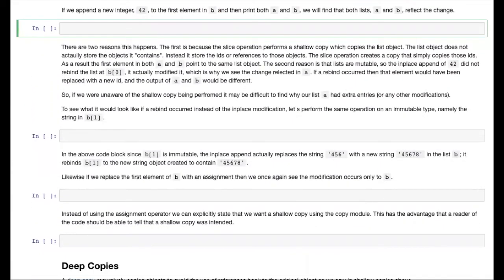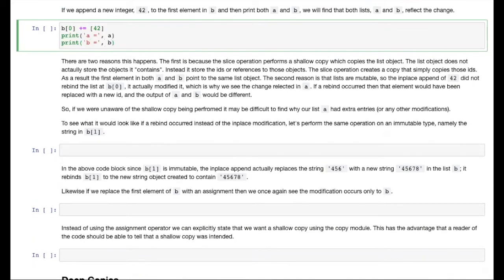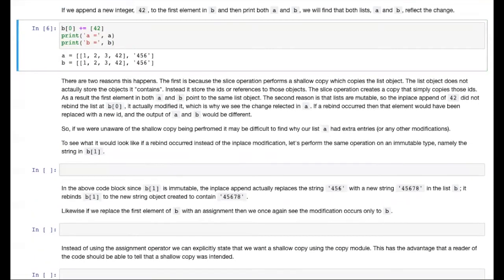So let's actually try modifying the list by appending a new element. Now again, if this was a reference, then both A and B should show the newly appended value. So if I write B[0], I'll use the in place append operator plus equals. We'll try to append the list containing 42. And then we're just going to print out both A and B. So when we print these lists, we see that both A and B show the new value 42 appended to the sublist. And that's even though A and B point to different objects. So this tells us that the slice operation did perform a shallow copy.